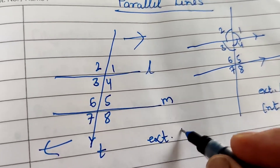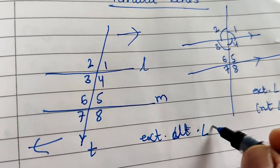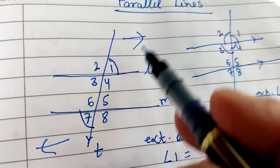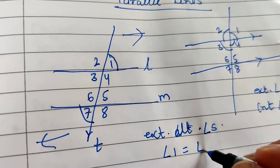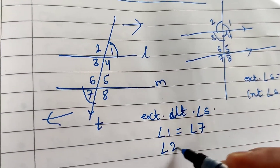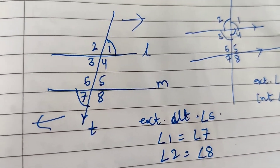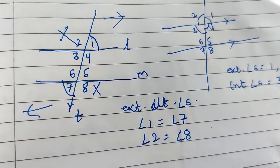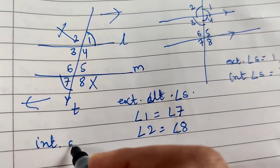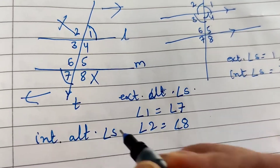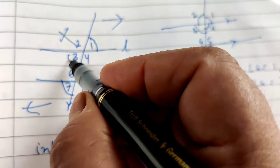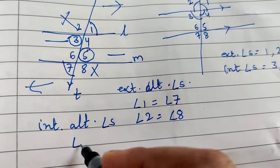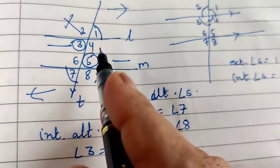Exterior alternate angles: angle 1 is equal to angle 7, and angle 2 is equal to angle 8 — these are the exterior alternate angle pairs in parallel lines. Similarly, for interior alternate angles: angle 3 equals angle 5, and angle 4 equals angle 6.